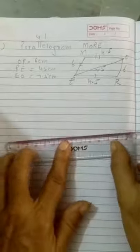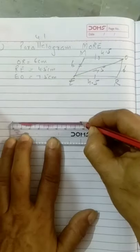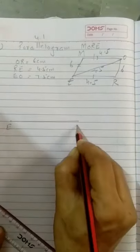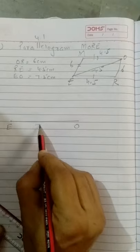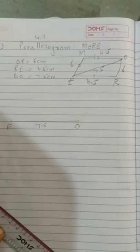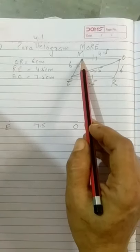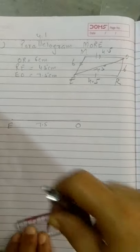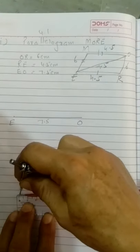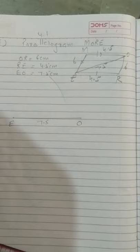So first of all, draw diagonal E.O. = 7.5 cm. Draw a line segment and name it E.O. Step 1: draw E.O. = 7.5 cm. Then, with E as the center and radius equal to 6 cm, draw an arc.